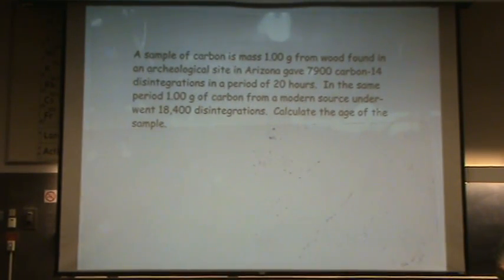So you got a sample of carbon, it has one gram, it's from wood. Basically you found some wood, old wood, petrified wood, something like that. You can measure that for the carbon-14, and there's 7,900 disintegrations over 20 hours. Basically with some sort of device measuring disintegrations like a Geiger counter or something.